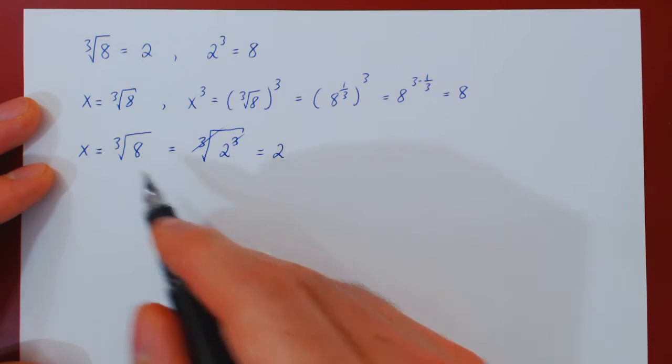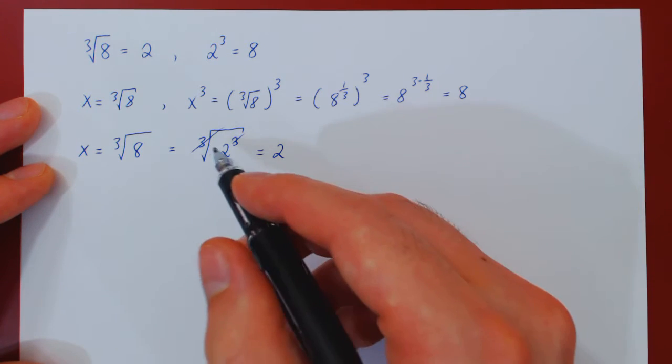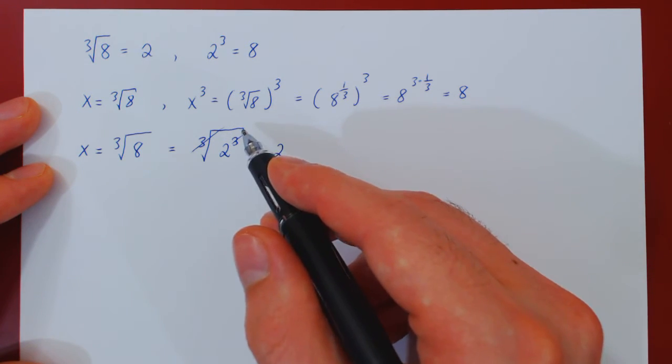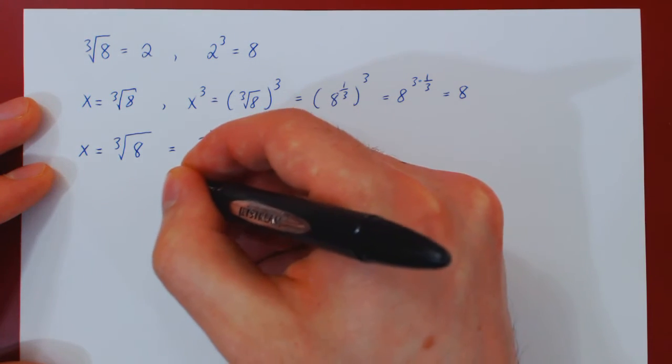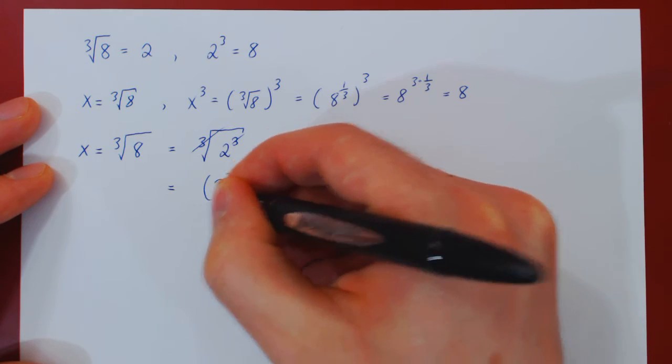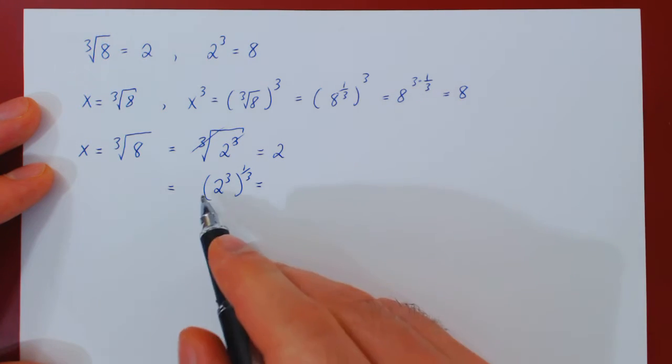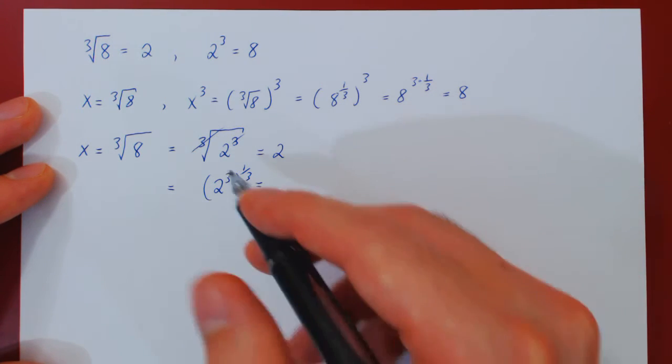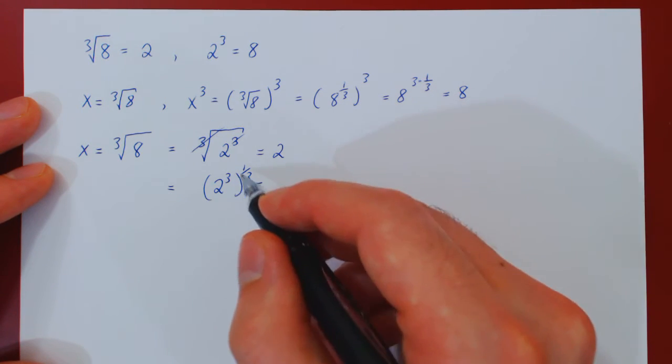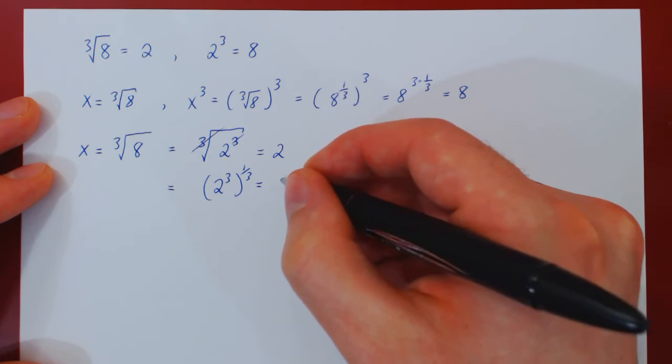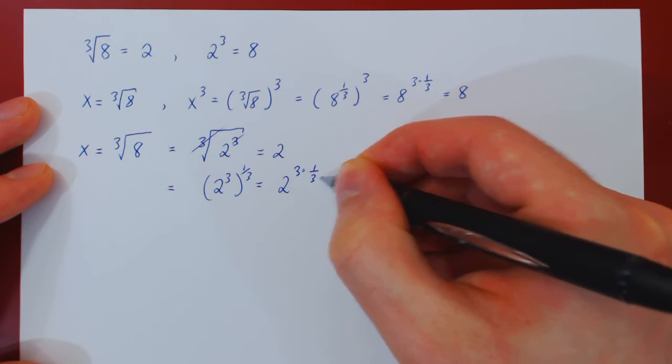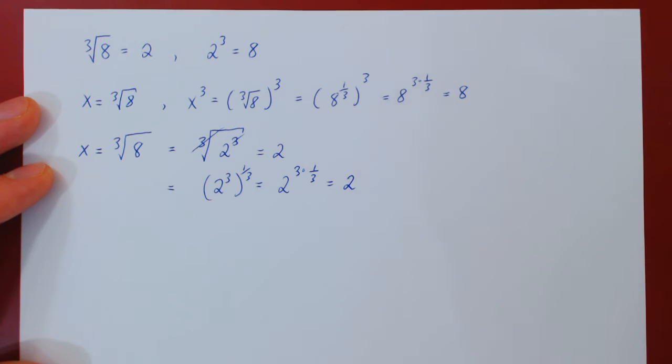So clearly the cube root of 8 is 2. You can also view this in exponent form, right? You could also say, well, I have 2 cubed, and the cube root is an exponent of 1 third. And now we're right back to this case. Double exponentiation, multiply the exponents, 2 to the 3 times 1 third, so which is 2 to the 1, which is 2.